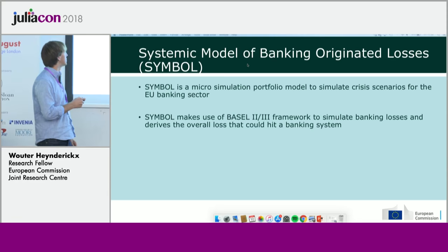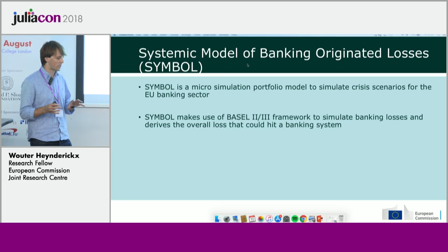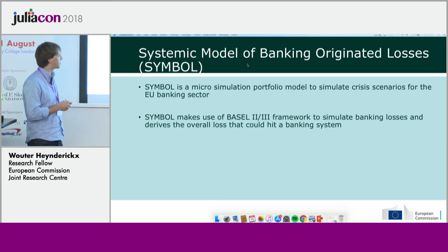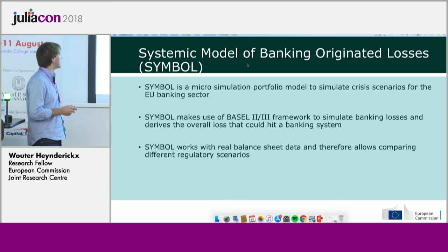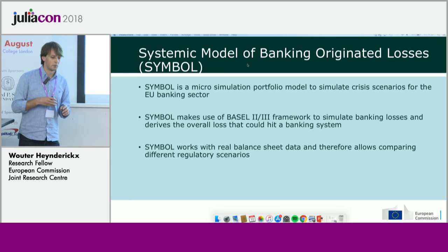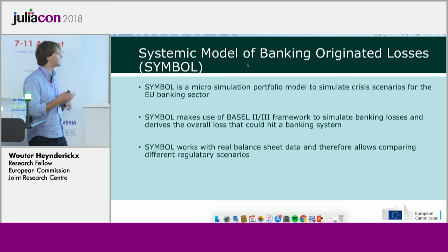To model this, we make use of the Basel 2 and 3 framework and invert the Basel formula to derive, per bank, a default probability, and from that we compute the total loss hitting the banking system. We use real balance sheet data, and the model output is used for different regulatory adjustments — for example, testing different scenarios for bail-in capital requirements.